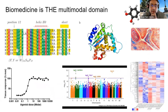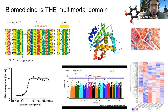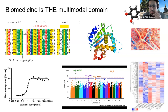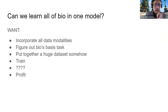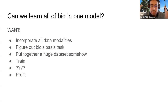Biomedicine is inherently multimodal — not just image and text. You have sequences, protein structures, dose responses, genetic associations, histopathological images, chemical structures, gene expression matrices — the modalities are essentially endless. If there's any domain where multimodality will both be a boon and a challenge, it's biomedicine. So the question is: can we learn all of biology into one model, incorporate all data modalities, figure out what biology's basis task is, put together a huge dataset, train it, and arrive at a useful foundation model?